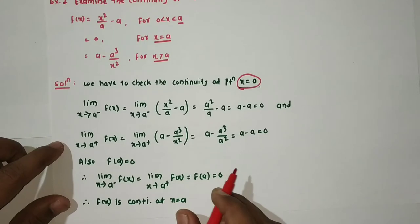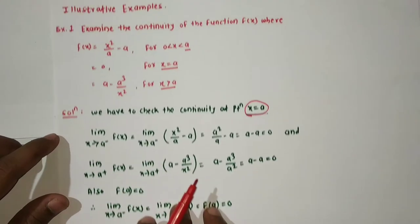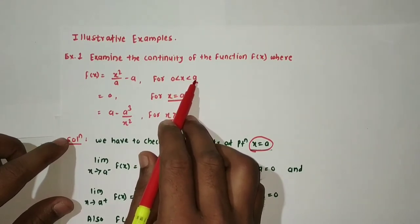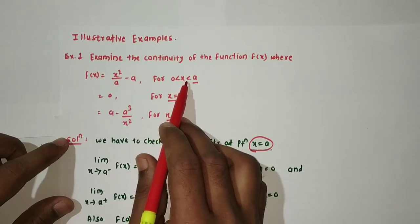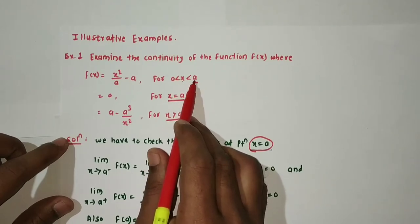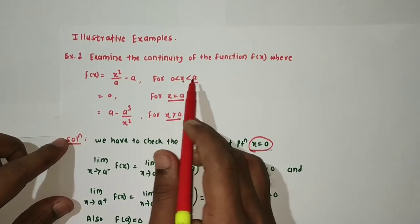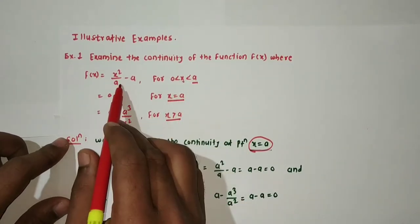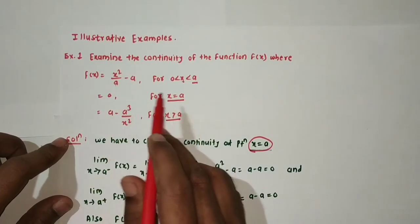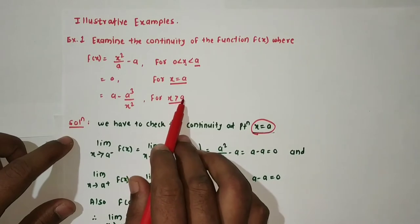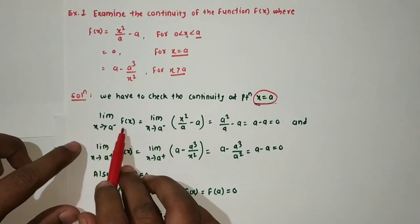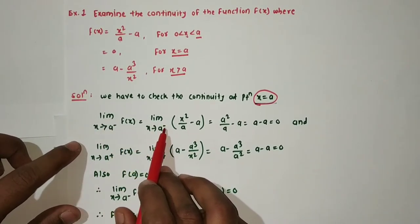For the left hand limit, as x tends to a from the left (x < a), we use the first function. When x equals a we use the second piece, and when x is strictly greater than a (a plus side) we use the third function.